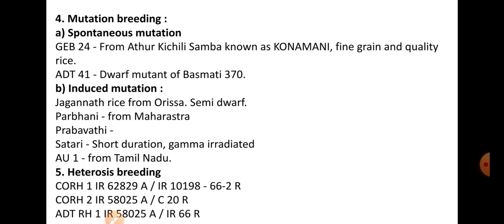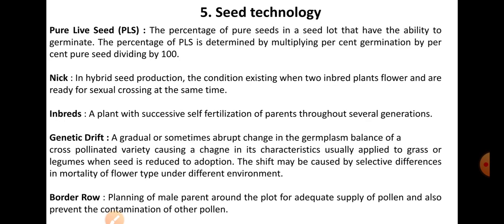In mutation breeding: Jagannath rice is a best example of induced mutation. For spontaneous mutation, Zeb-24 from Athur Khichili Samba is known as Kornamani — a fine grain quality rice. ADT-41 is a dwarf mutant of Basmati 370. For induced mutations, Jagannath rice is a semi-dwarf variety treated with X-ray (some books mention gamma ray). Parbhani from Maharashtra, Prabhavati, Satari (a short-duration gamma-irradiated variety), and AU-1 from Tamil Nadu. In heterosis breeding: CORH-1, KRH-1, APRH-1, ADT-RH-1 are popular hybrids; nowadays many private company hybrids are also available.